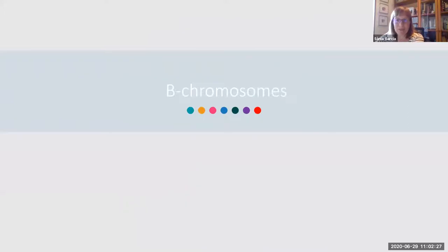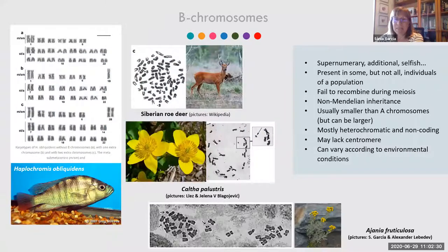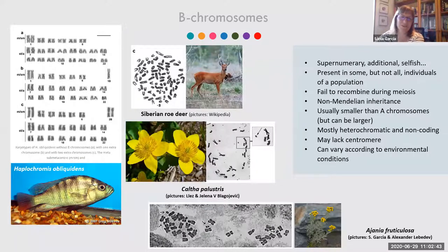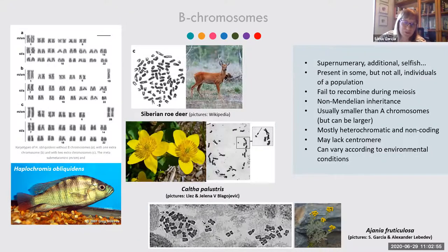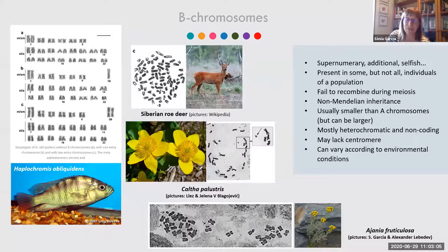First we will talk about B chromosomes. B chromosomes are also called supernumerary, additional, or selfish chromosomes. They are mostly not necessary for the plant or organism to survive, and they are present in some but not all individuals of a population. They may also be present in certain tissues but not others, or even in the same tissue some cells may have B chromosomes and some may not. B chromosomes fail to recombine during meiosis and have non-Mendelian inheritance.